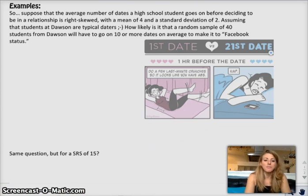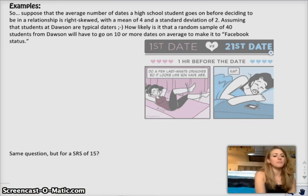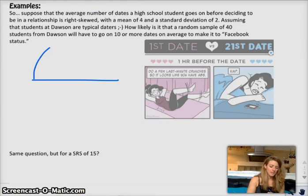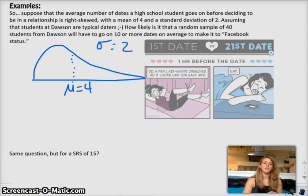Here's the deal, right? We're starting out with the parent population. So, the entire world of teenagers dating, every teenager in the world. And it starts out as right skewed. This is my parent population. My parent population looks something like that. And it has a mean, which will probably be about here, μ = 4 and a standard deviation σ = 2. But we're not looking at the entire population. What we're looking at is a random sample of teenagers, specifically from Dawson. We're just going to assume that Dawson is a nice little bubble of normal teenagers.